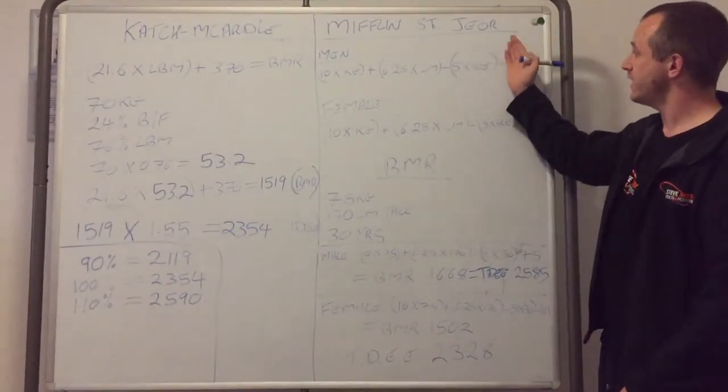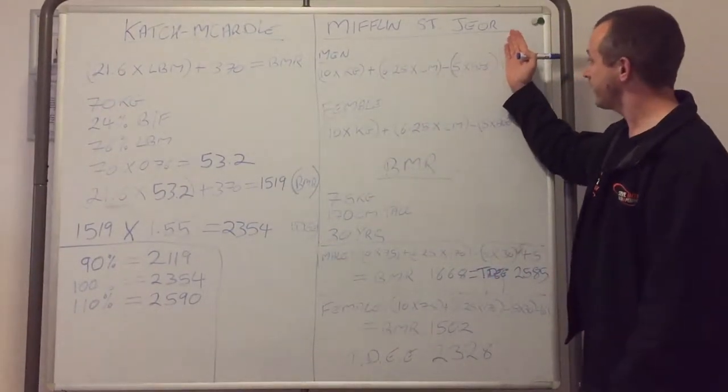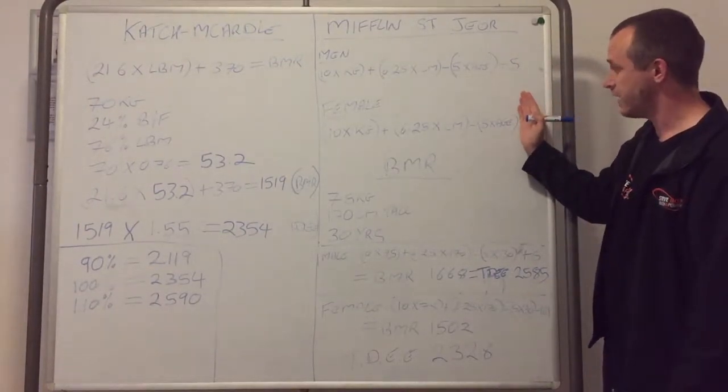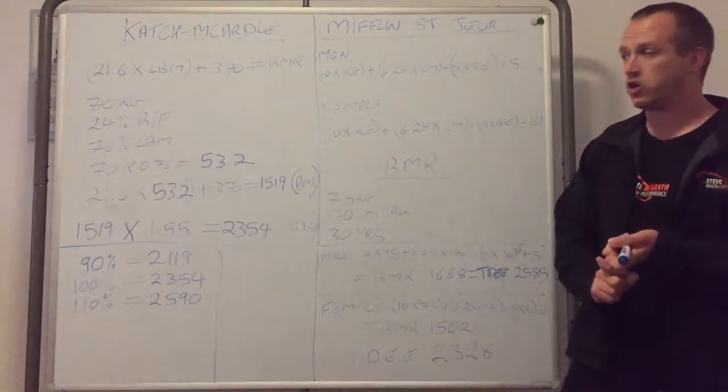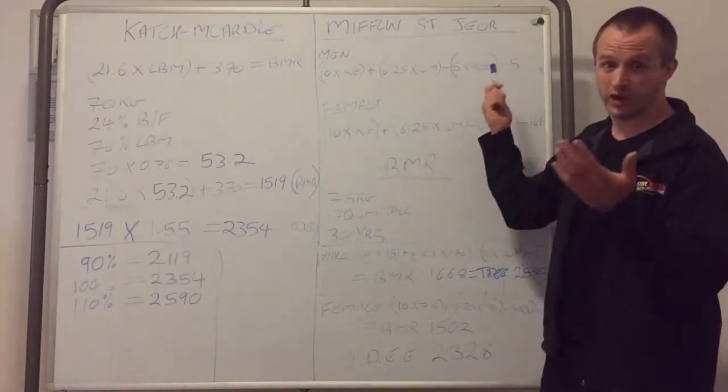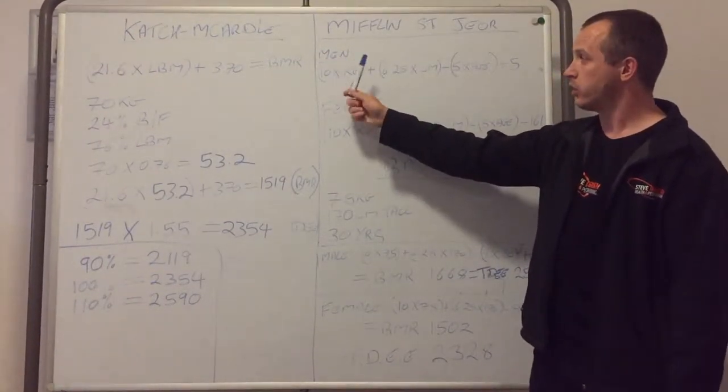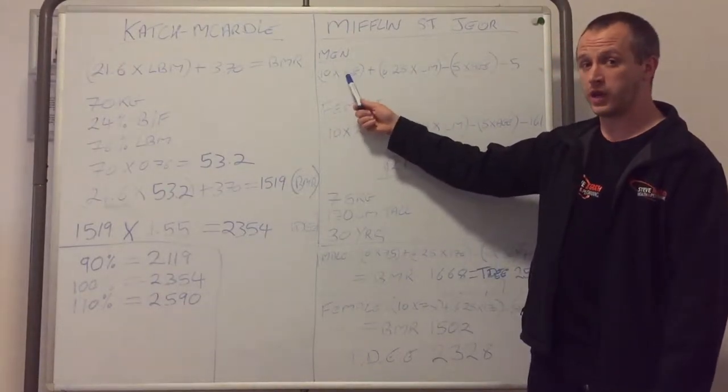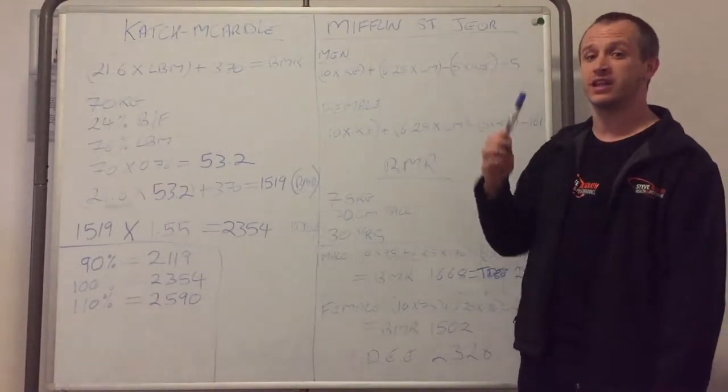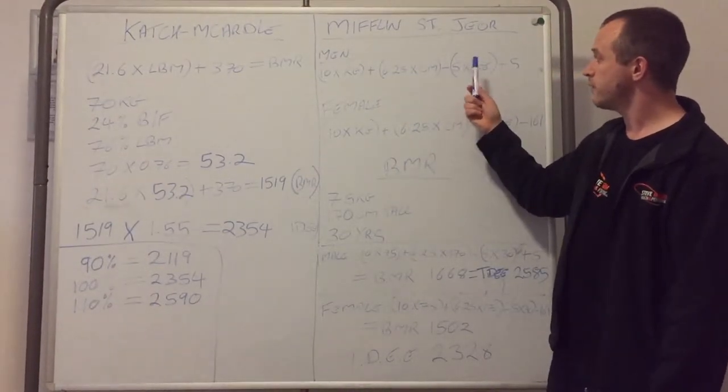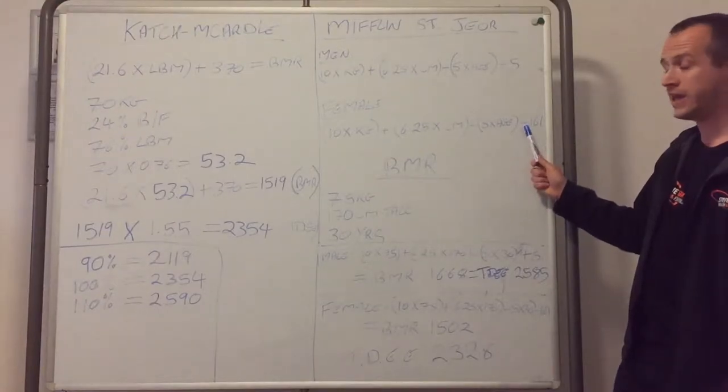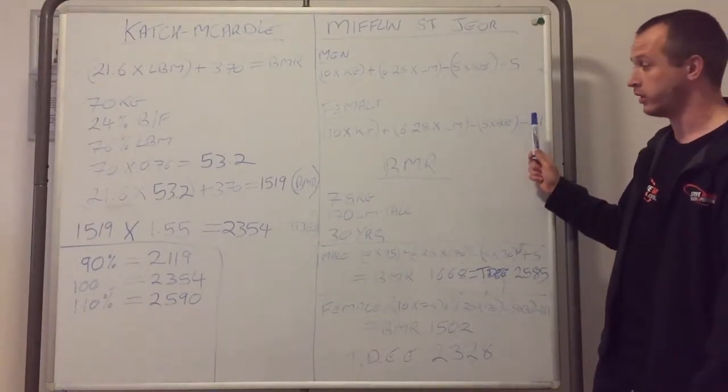The other one here is the Mifflin—it's the same equation for men and women except for men you add 5, for women you take away 161 at the end of the equation. So for this you need to know your body weight in kg, your height in centimeters, and your age. The equation is 10 multiplied by your body weight in kg, plus 6.25 multiplied by your height in centimeters, minus 5 times your age. And then for men you add 5 to that answer. For women you take away 161 from that answer.